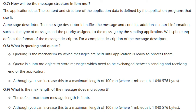What is queuing and what is a queue? Queuing is the mechanism by which messages are held until an application is ready to process them. A queue is an IBM MQ object used to store messages that need to be exchanged between the sending and receiving ends of an application.